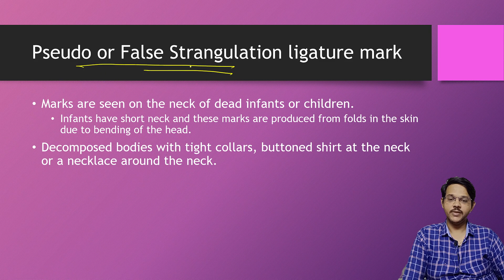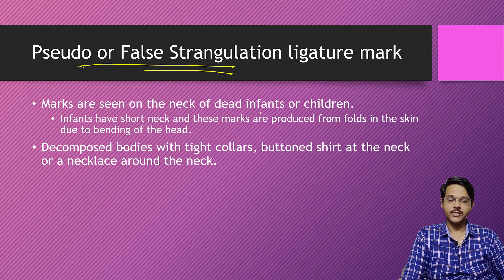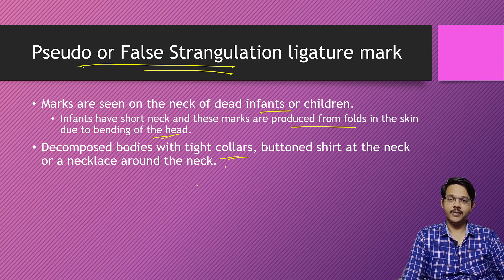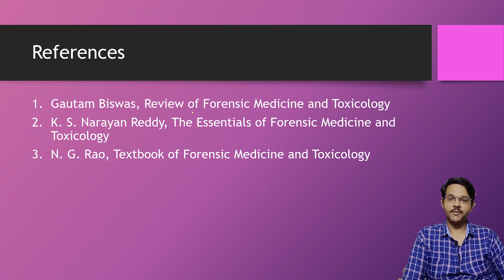One more consideration is pseudo or false strangulation, where normal marks on the neck are confused for ligature marks. Common examples include neck band marks and neck skin foldings in infants or fat children, since infants have short necks and the skin folds may be confused for a ligature mark. Marks produced from pressure on the neck or bending of the head may also be misinterpreted. In decomposed bodies, tight collars may form a mark on the neck. The mark must be carefully examined for presence of ecchymosis, imprint contusions, and imprint abrasions before being considered a ligature mark.